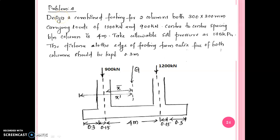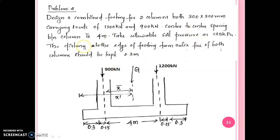Next question: design a combined footing for two columns, both 300 by 300 mm, carrying loads of 1200 kN and 900 kN. The center to center spacing between the columns is 4 m. The allowable soil pressure is 175 kPa. The distance to the edge of the footing from the outer face of both columns is kept as 0.3 m.